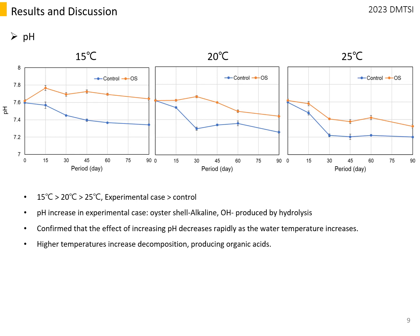An increase in pH can be useful for acidified sediments. The oyster shell in this study did not show a significant pH increase in the experimental cases compared to the control, because the pyrolysis temperature was low. Nevertheless, care must be taken because rapid pH change can affect organisms.